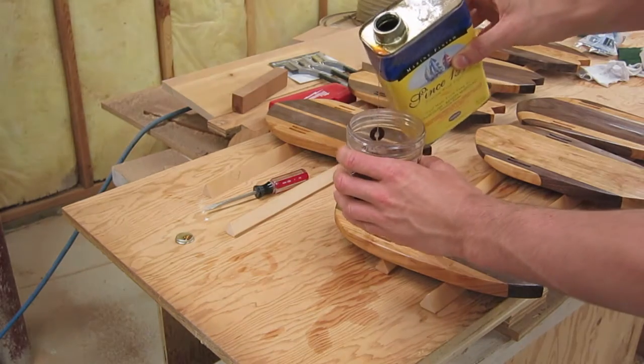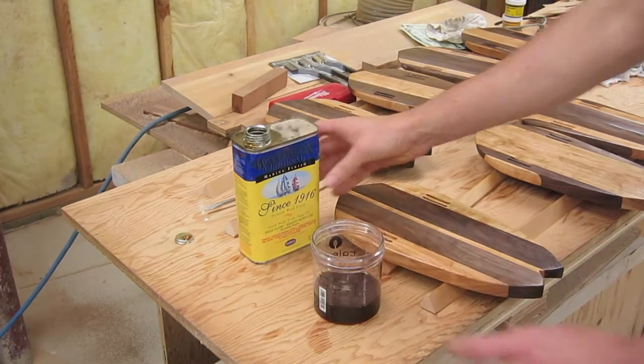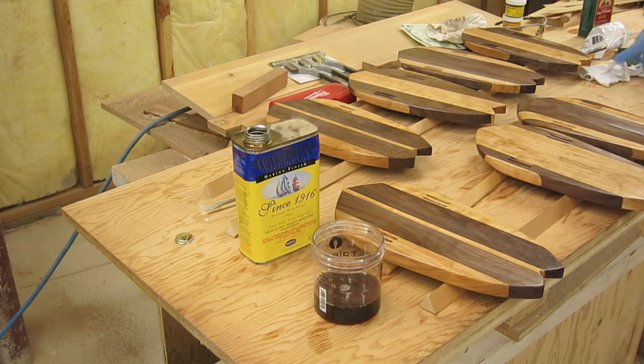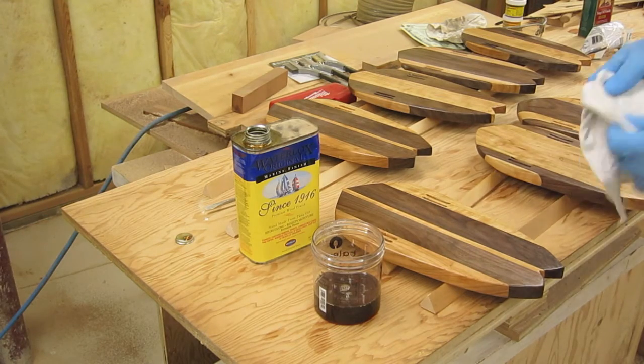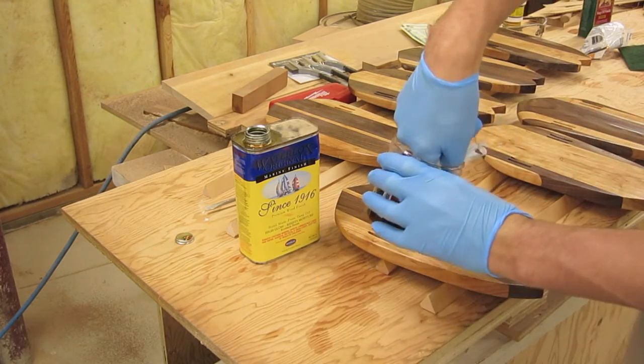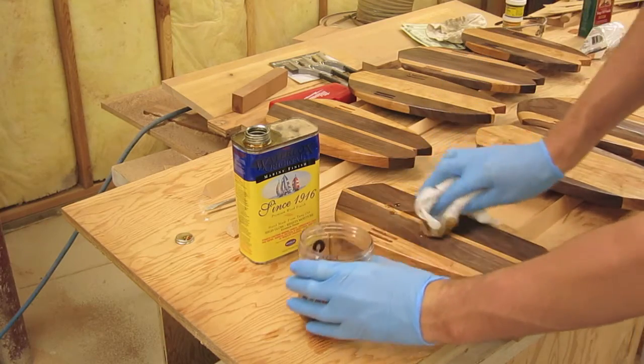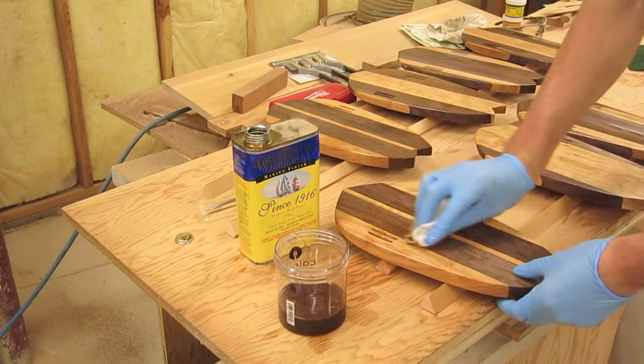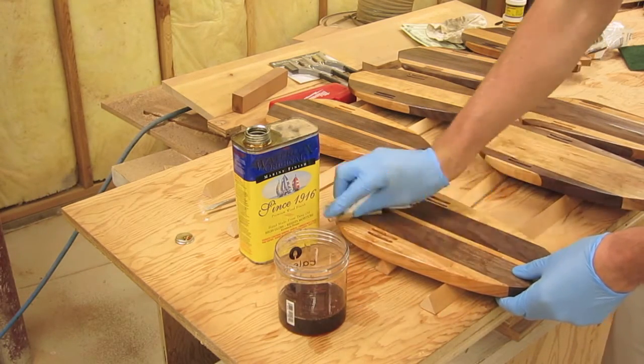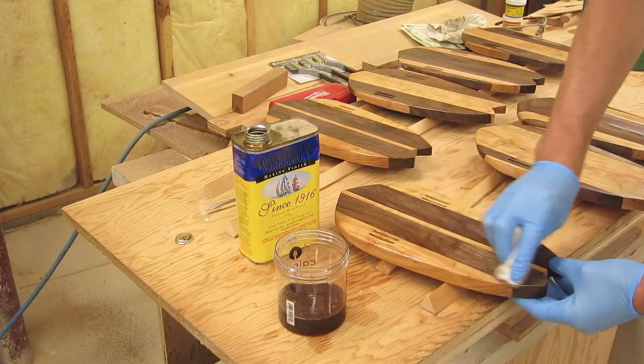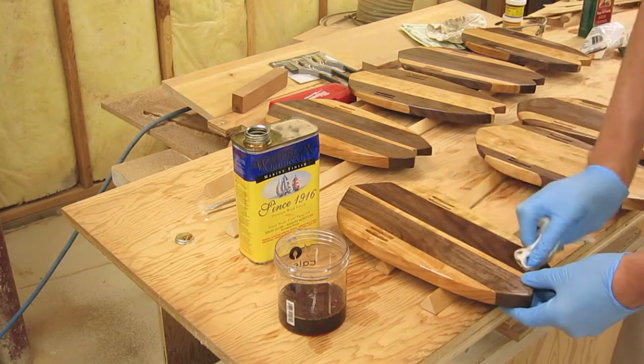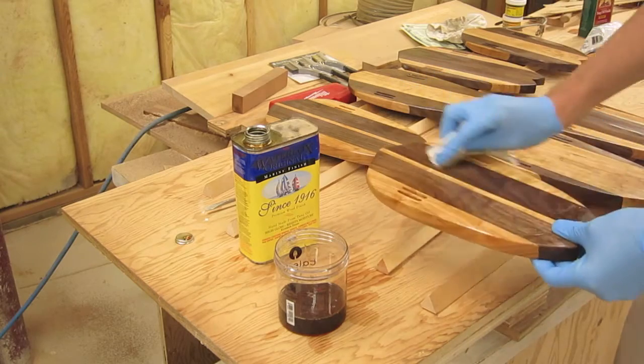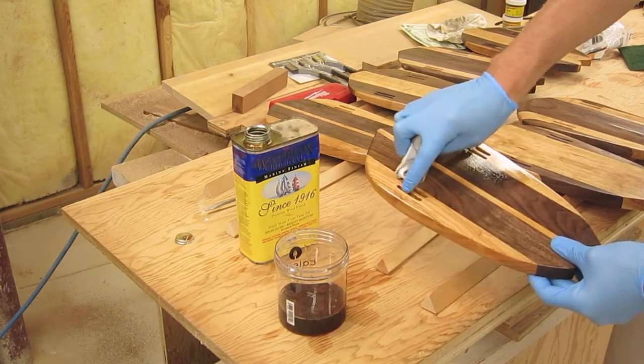So we'll pour that out. We've got our clean cloth here. And this is a lot thicker and more syrupy than the original stuff, because it's going to be a thicker coat. Just going to wipe it on like so. Get on these sides. Use a small brush to get in here.